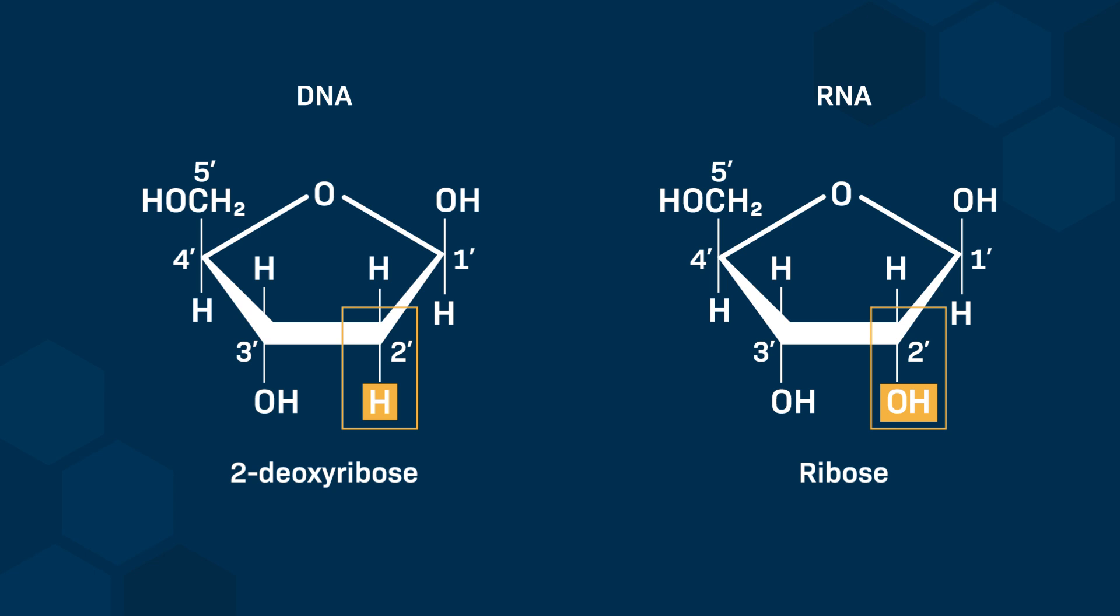On the carbon-2' of ribose, there is a hydroxyl group, usually notated as dash-OH, which is responsible for some of RNA's chemical activity. It also leads to the low stability and rapid degradation of messenger RNAs.